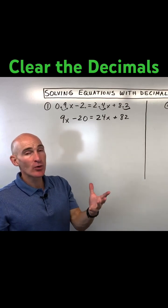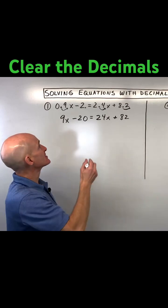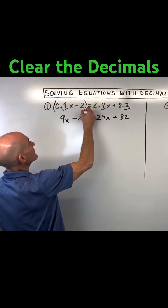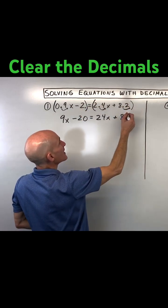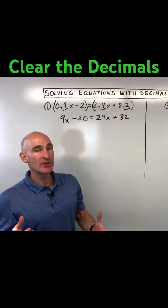Now the reason this works is we're keeping the equation balanced. It's like we're multiplying the left side by 10, and we're also multiplying the right side by 10. And so it's keeping the equation balanced.